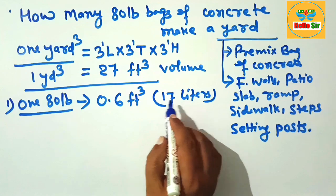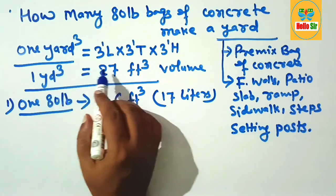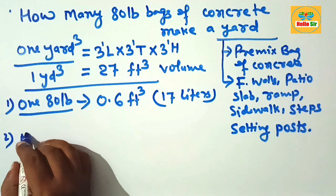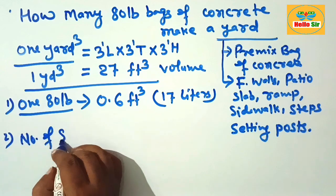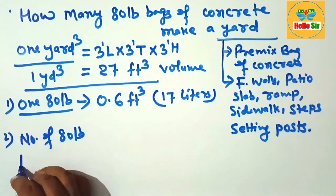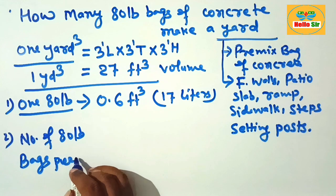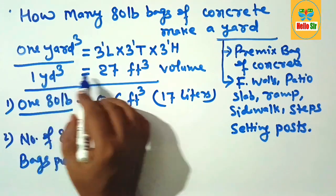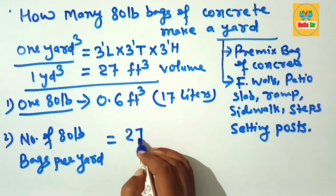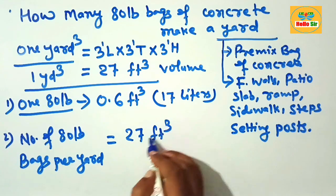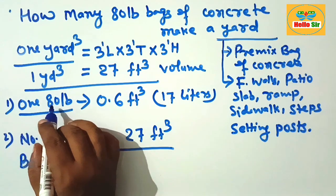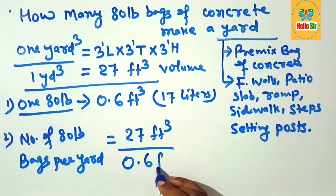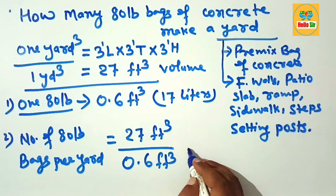The total cubic yard volume is 27 cubic feet. Now calculate the number of 80 pound bags per yard. How do we calculate? The total volume of one cubic yard is 27 cubic feet, and the volume of one bag of 80 pound concrete equals 0.6 cubic feet. If you divide this,